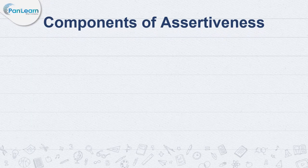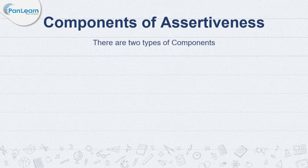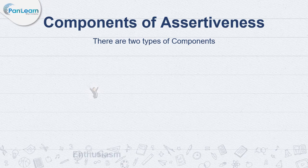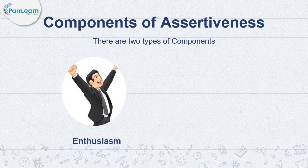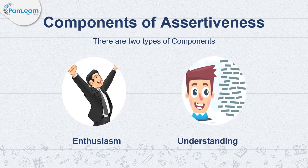Let us now learn about the components of assertiveness. There are two components of assertiveness. Enthusiasm indicates the level of understanding sought by an individual in communication, and it includes both verbal and non-verbal elements.